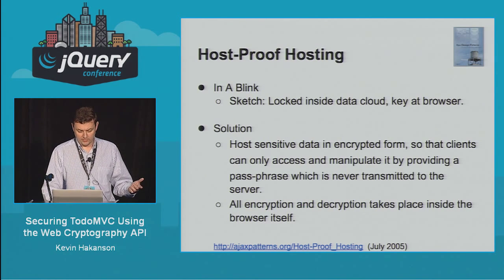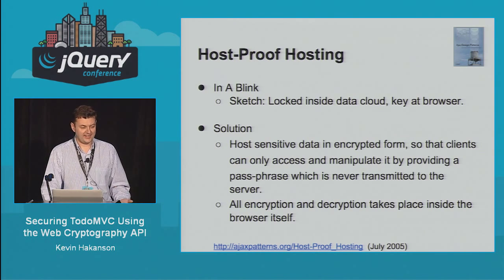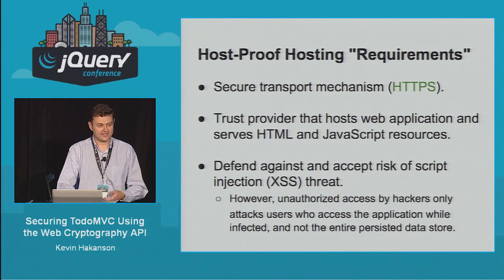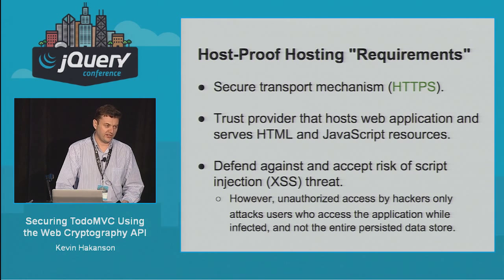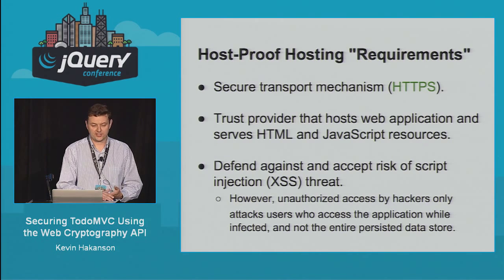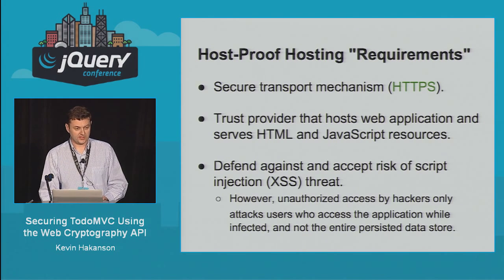This isn't my idea — there was an AJAX pattern back in 2005 called host-proof hosting. The concept is: host the data in the cloud, keep the key at the browser, where all encryption and decryption takes place in the browser itself. You still want HTTPS, you still need to trust whoever's serving your web application, and you still need to defend against cross-site scripting. But if your data is encrypted on the host, you're safer against offline attacks where someone might exfiltrate all the data on the site.